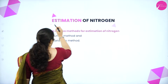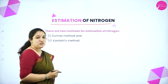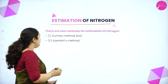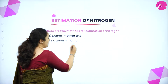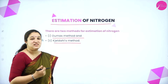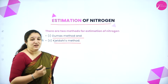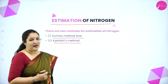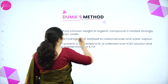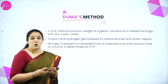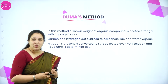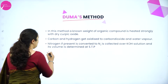First is estimation of nitrogen. Estimation of nitrogen can be done in two methods: that is Dumas method and Kjeldahl's method. We'll learn each method and see how we can estimate the nitrogen in an organic compound. The first method is Dumas method. In this method we take the organic compound and heat it with copper oxide, that is CuO.